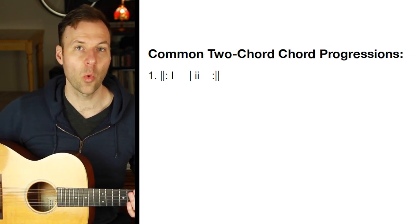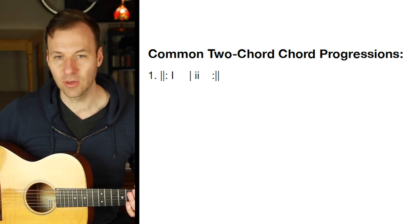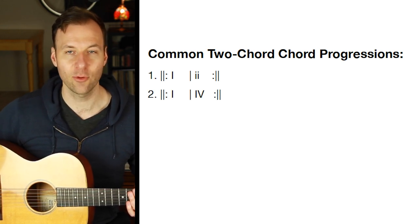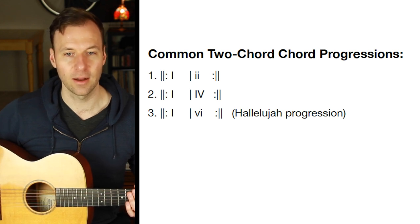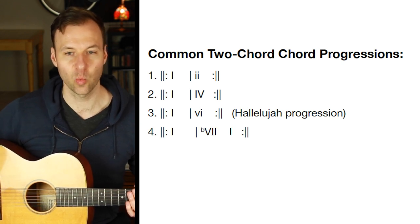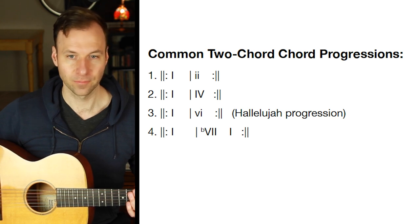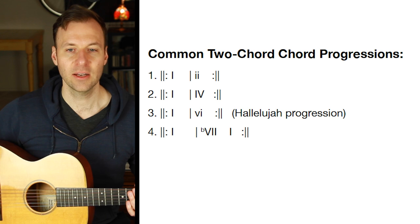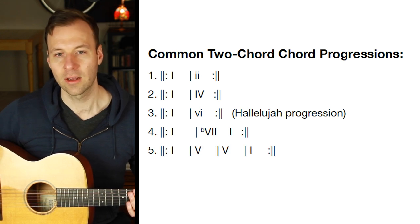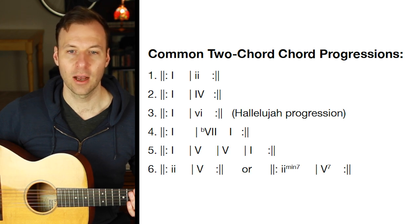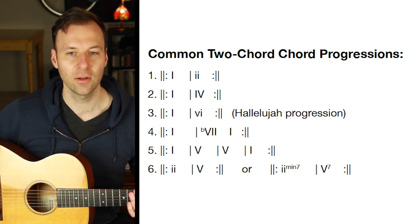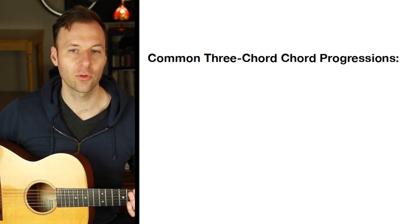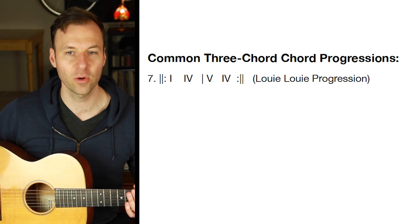The two-chord progressions: first was one and two, then one and four, then one and six — the Hallelujah progression from Leonard Cohen and the Jeff Buckley version. Next is what I call the Bo Diddley progression: one to flat-seven major and back. Then one-five-five-one, and finally two-five — often used with a minor seven and dominant seven, but can be done with triads as well.